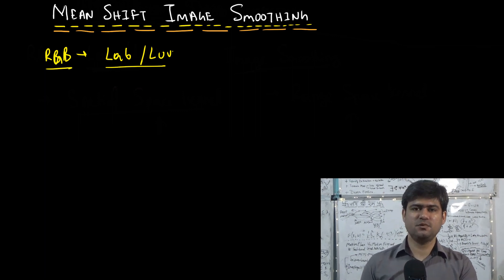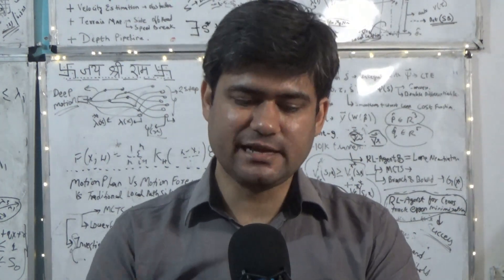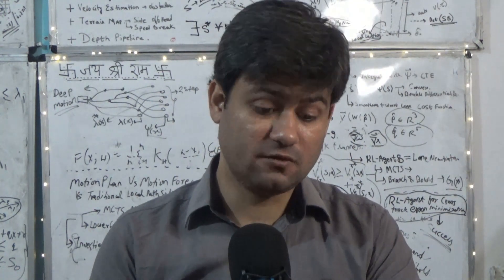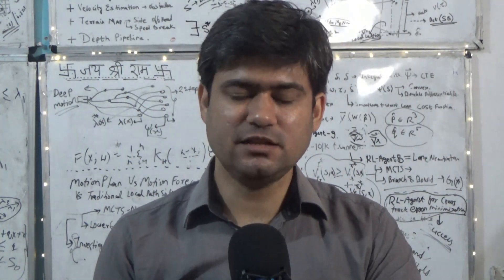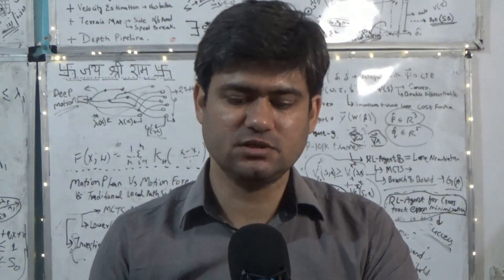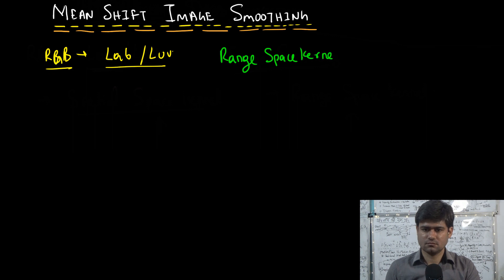In regular computer vision, we blur a pixel with its neighboring spatial points. In the bilateral filter, we also take the spatial distance of neighboring points into account when computing the weighted mean for smoothing a pixel location. Similarly, in the mean shift algorithm, we define the multivariate kernel as a product of two radially symmetric kernels with two different bandwidth parameters: one for the spatial domain and one for the range space domain, with bandwidth parameters HR and HS.